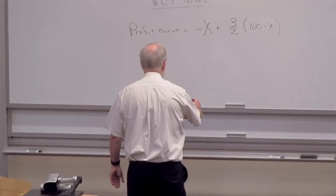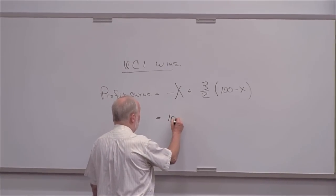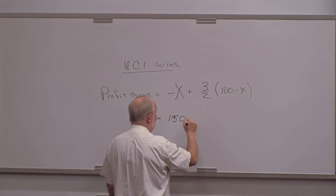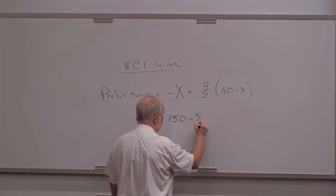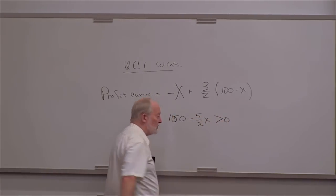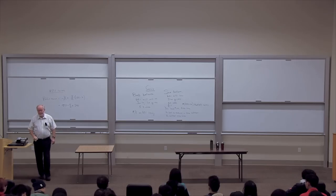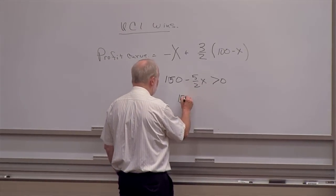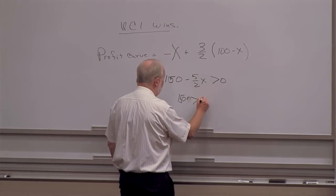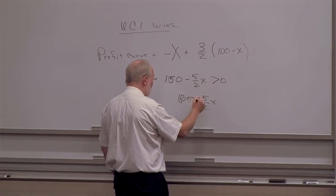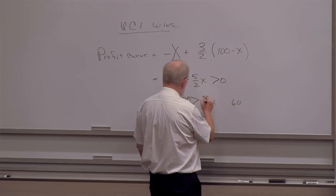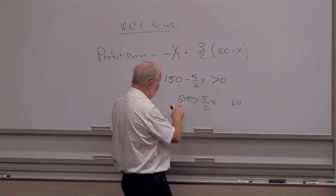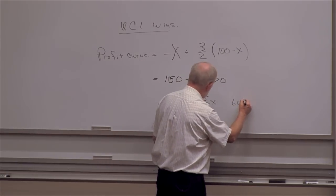Collecting the terms, it's going to be 150 minus three-halves minus five-halves X, and I want this to be greater than zero. It will be greater than zero when 150 is greater than five-halves X, or when X is less than 60.